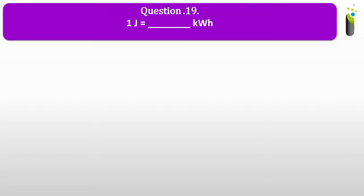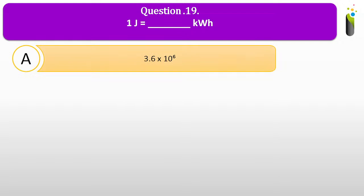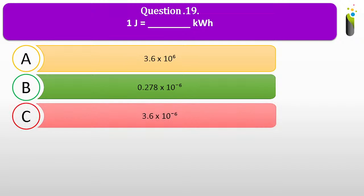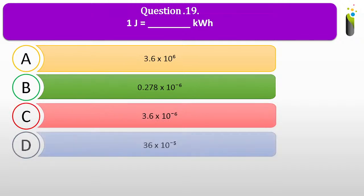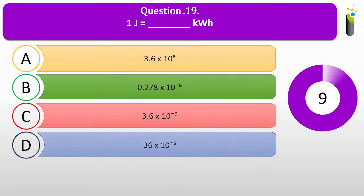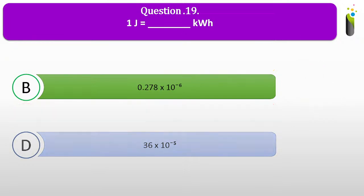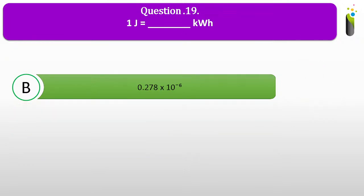Question number nineteen. 1 joule is equal to dash kWh. Options: A, 3.6 × 10⁶; B, 0.278 × 10⁻⁶; C, 3.6 × 10⁻⁶; D, 36 × 10⁻⁵. The correct answer is B: 1 joule equals 0.278 × 10⁻⁶ kWh.